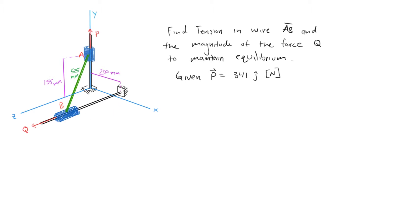The first thing we're going to do is define this length, because we were given the length of A in the Y direction and the length of B in the X direction, but we're not given the length of B in the Z direction, which we'll need later. So I'm going to define a triangle here. This is a right triangle because the pole B lies in the plane and the vertical distance is strictly in the Y direction, and the Y axis is perpendicular to the X-Z plane.